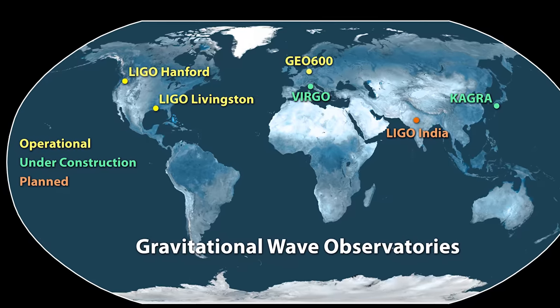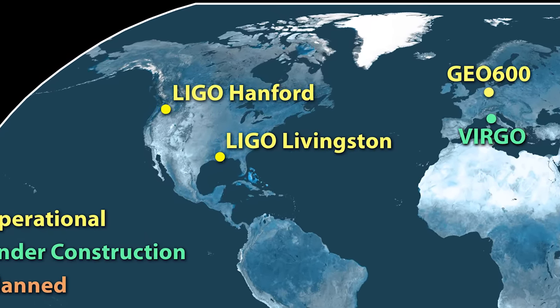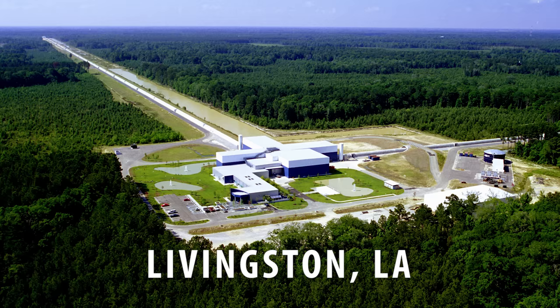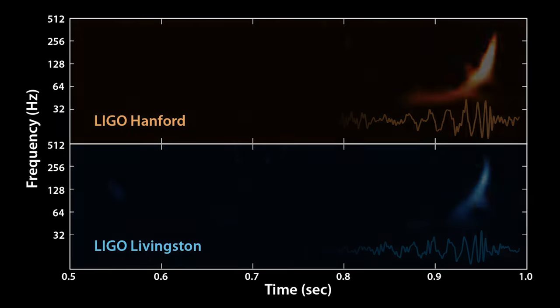And even then, the only way to be certain not to be tricked by environmental noise was to build two detectors far apart from each other in reasonably quiet locations. That allows you to distinguish between local noise, which would appear at only one site, and gravitational waves, which would pass through both sites almost simultaneously.